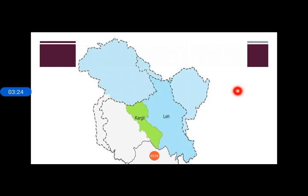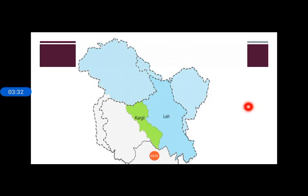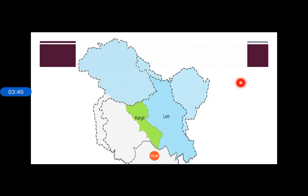The two important cities of Ladakh are Leh and Kargil. In the word 'Ladakh,' 'La' means mountain pass and 'Dakh' means a country. Till June 1979, Ladakh was a single district; in 1979 it was divided into Leh and Kargil districts for better administration and smooth functioning.